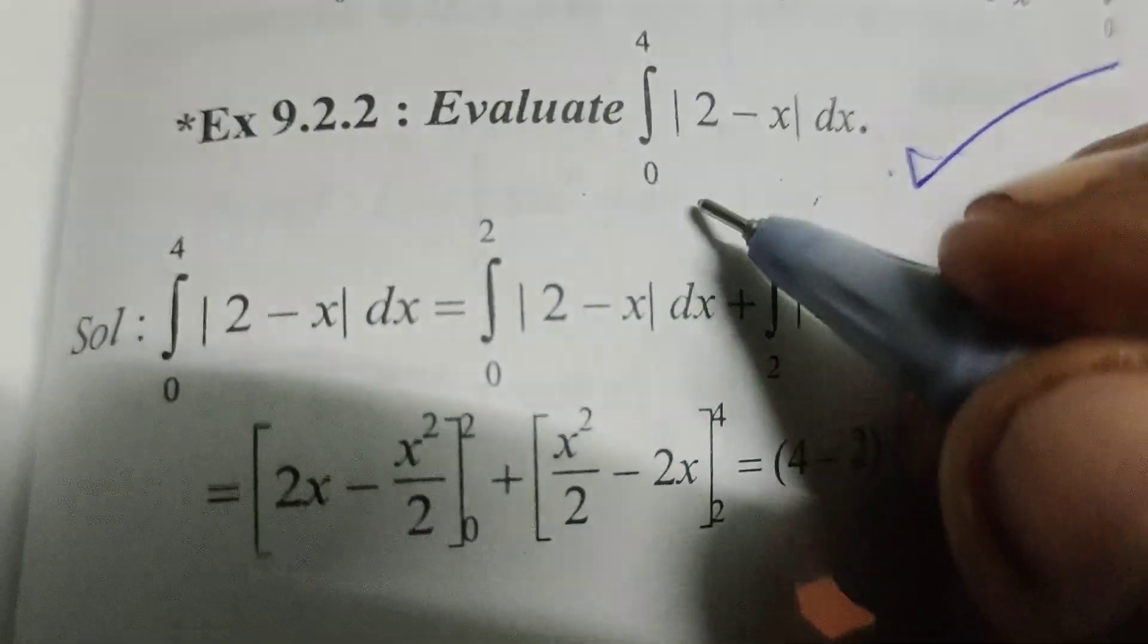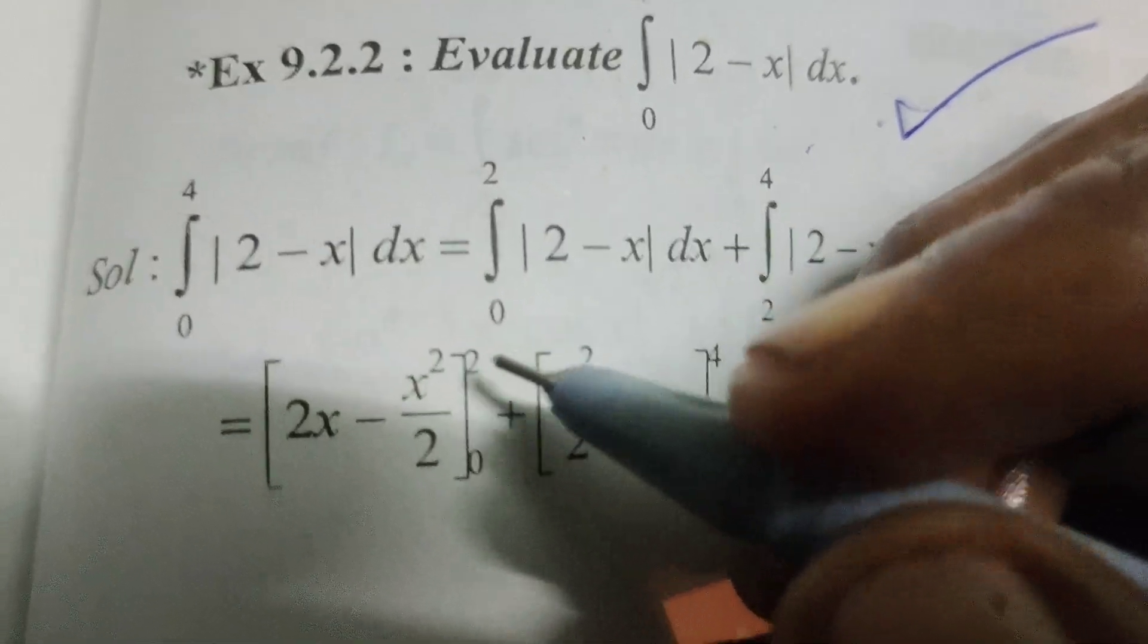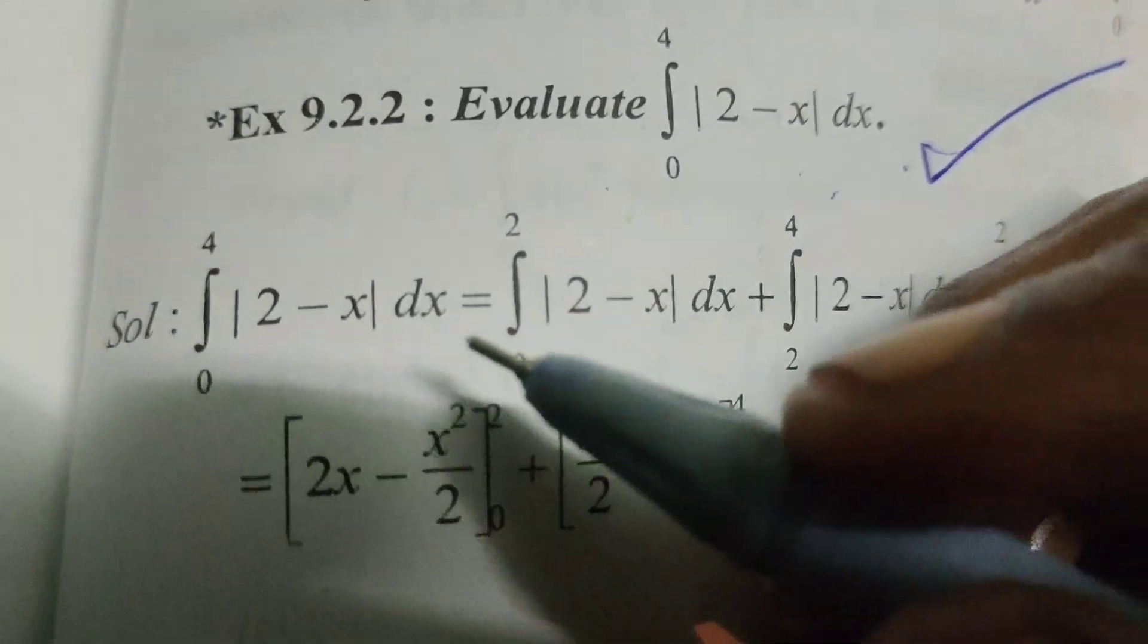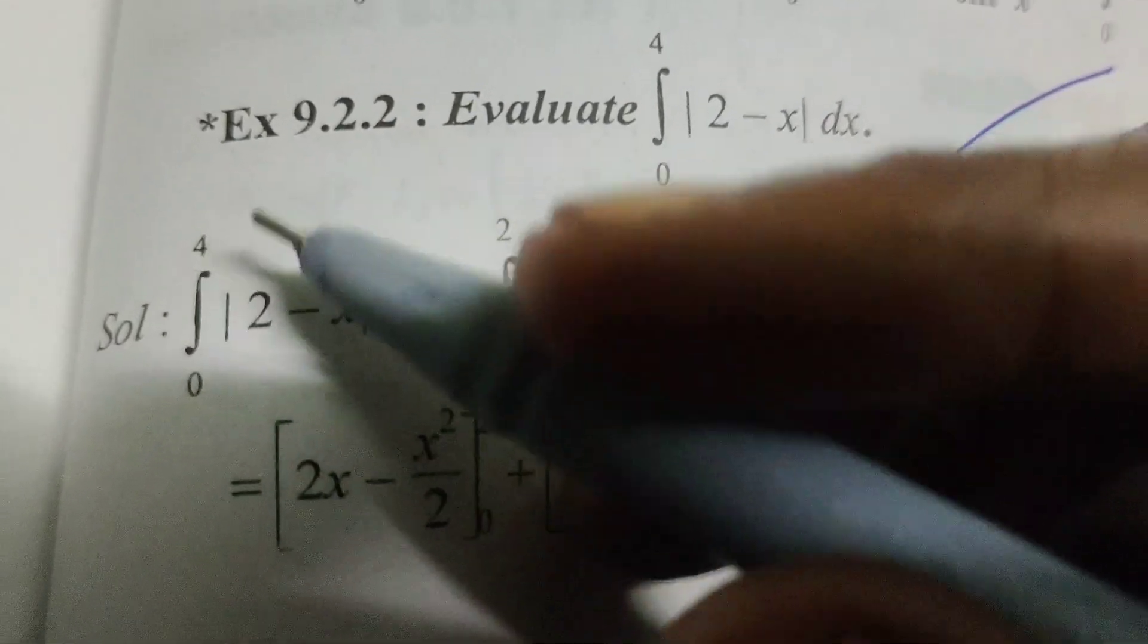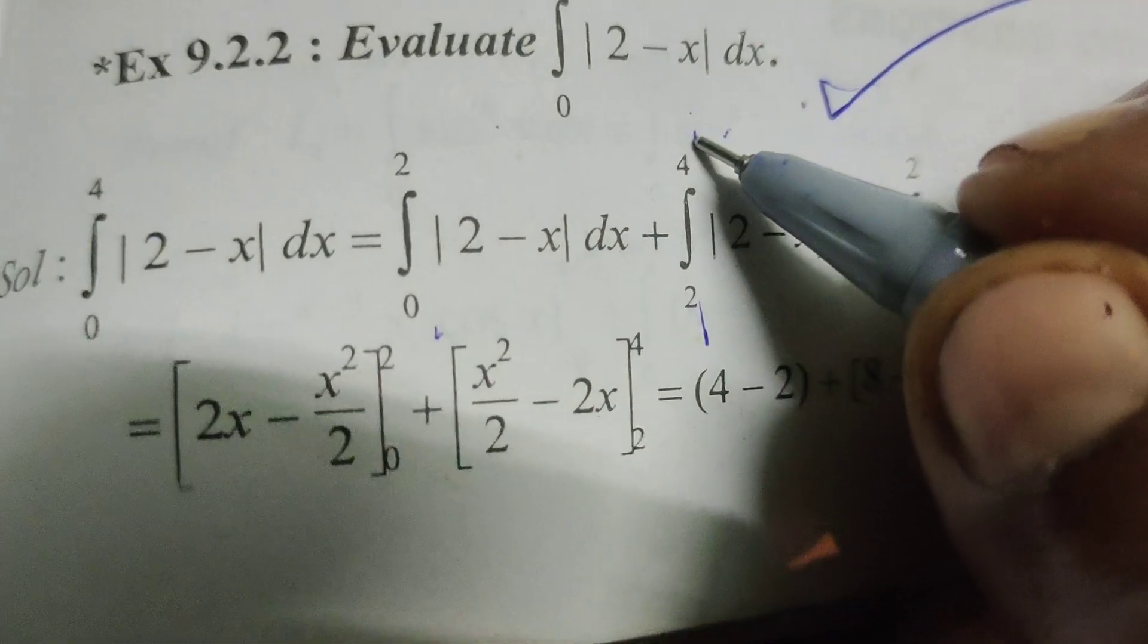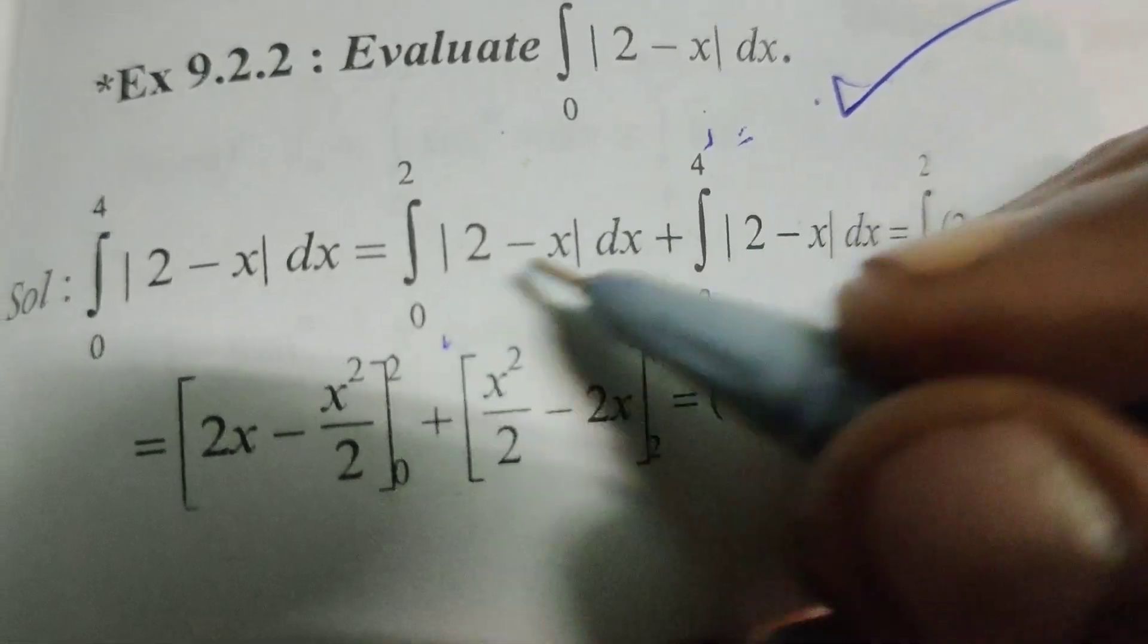The problem is: integral from 0 to 4 of |2 - x| dx. We start by splitting this integral from 0 to 4 into two parts: 0 to 2 and 2 to 4.